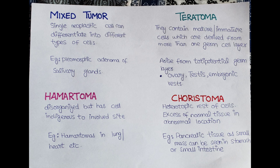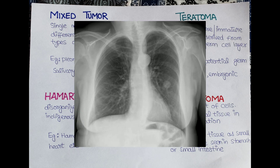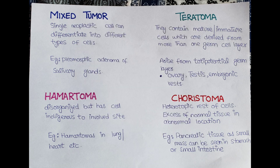Next is hamartoma — these are basically benign masses of tissue where the characteristic feature is disorganized but indigenous cells, meaning they have elements normally found at that site. Common examples are hamartomas in the lungs, heart, and breast. The last term is choristoma, which is a heterotopic rest of cells — meaning normal tissue in an abnormal location. For example, small masses of pancreatic tissue found in the mucosa of the stomach or intestine, more commonly in the duodenum.